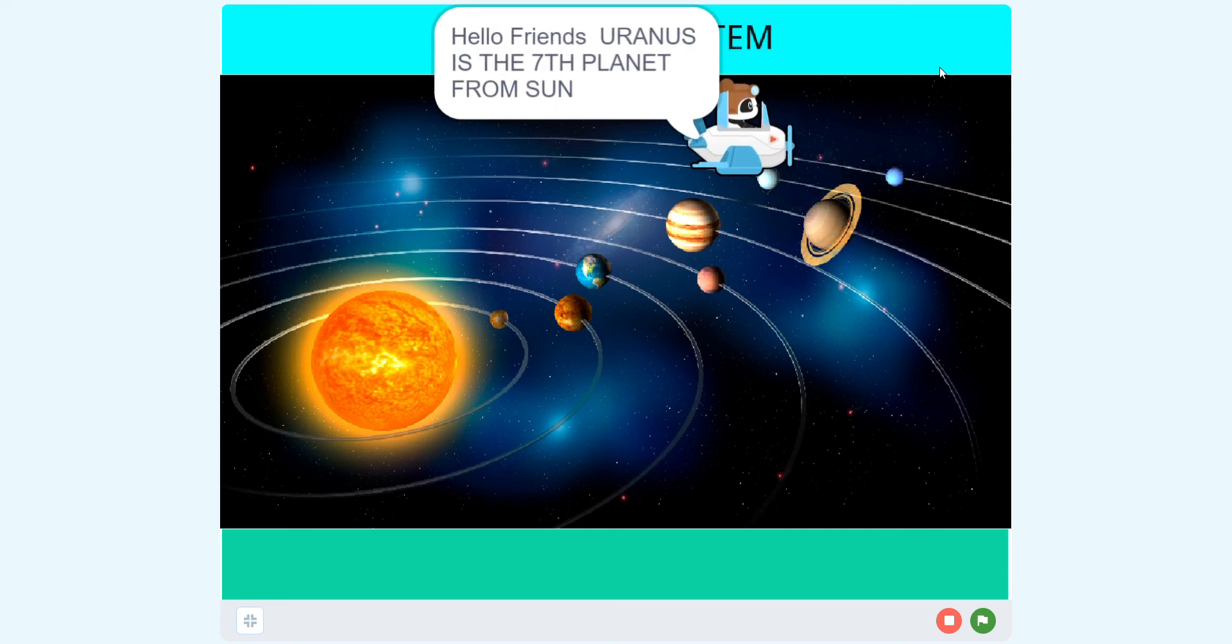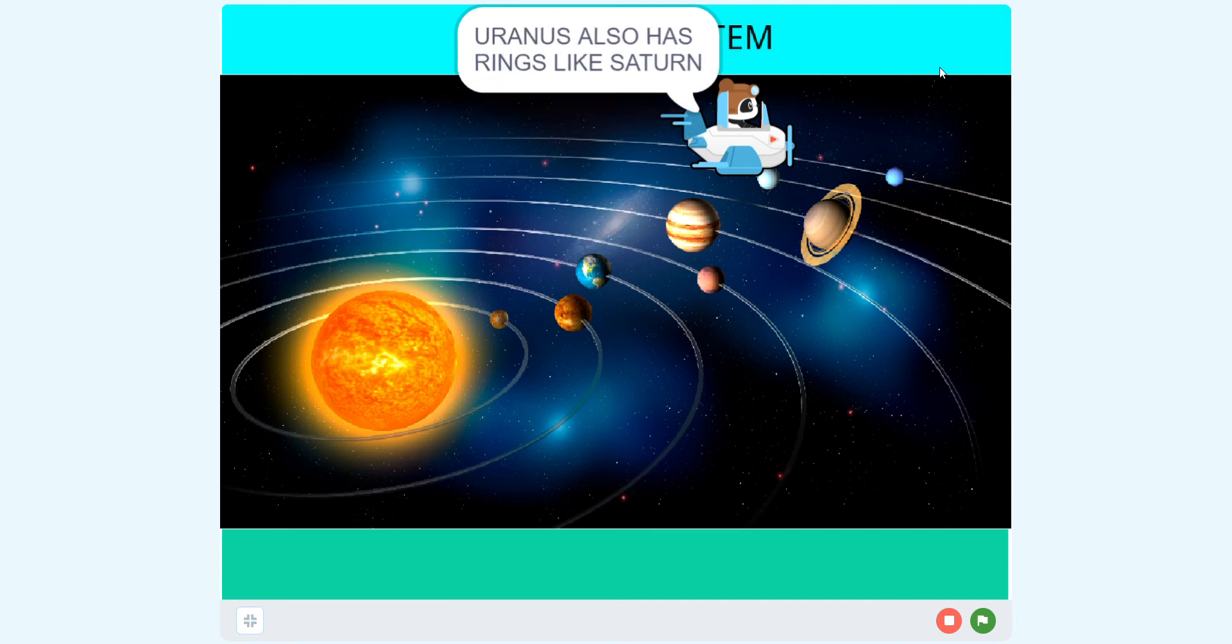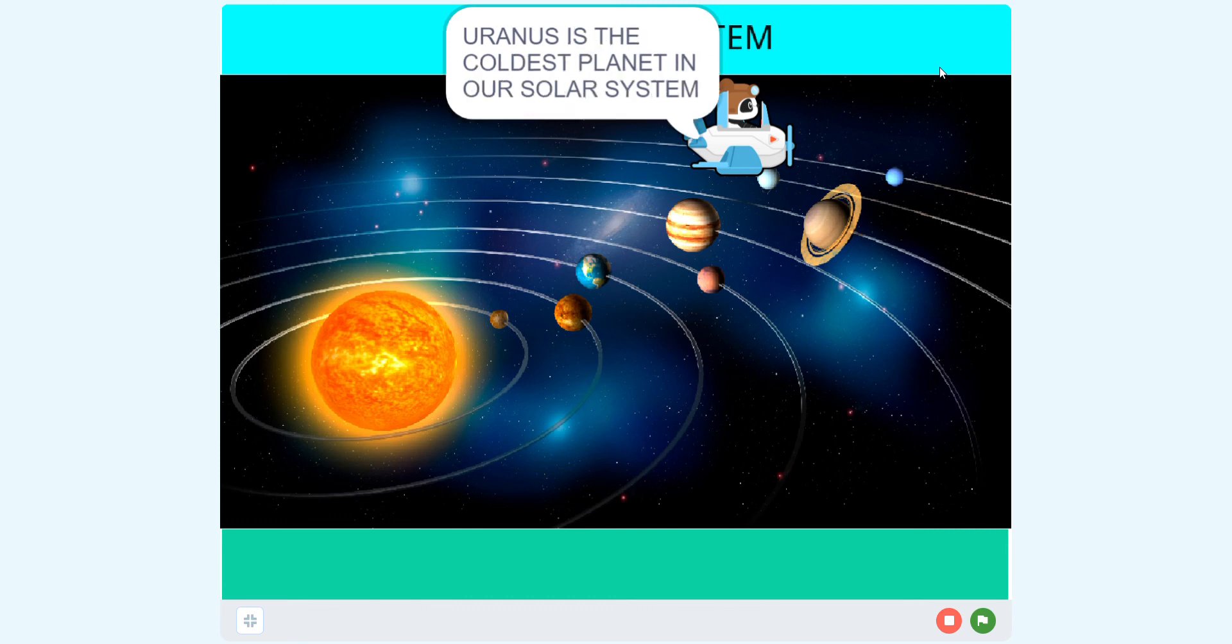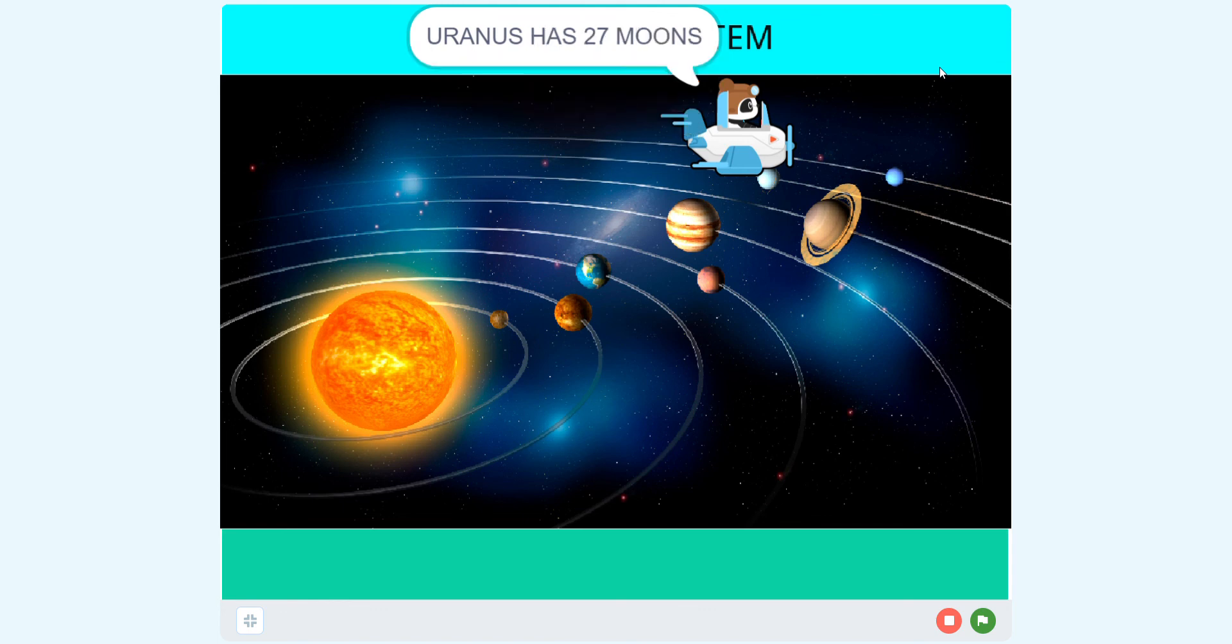Uranus is the seventh planet from the Sun. Uranus also has rings like Saturn. Uranus is the coldest planet in our solar system. Uranus has 27 moons.